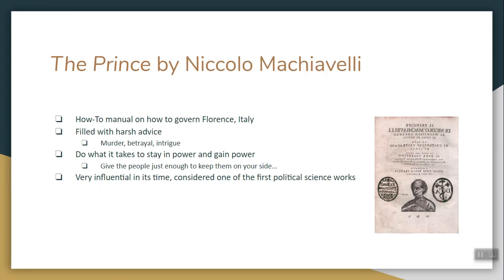Last but not least is Niccolò Machiavelli. He writes a book called The Prince, which was a very important book of its time — a how-to manual on how to govern. Machiavelli is based out of Florence, Italy. This was really written for the Medici family, but others start to read it. It's filled with harsh advice — basically, do what you need to do to stay in power. Sometimes you have to be nice, sometimes firm, sometimes loving, sometimes you have to kill people. The Prince is very often considered one of the first, if not the first, political science work of history.